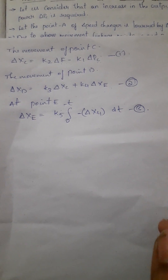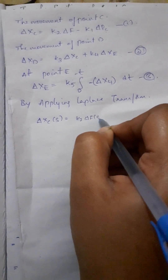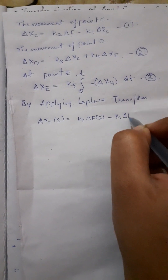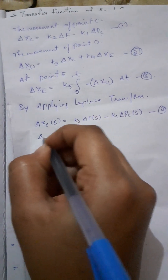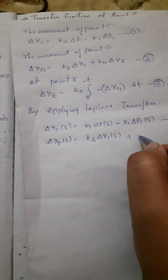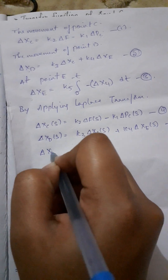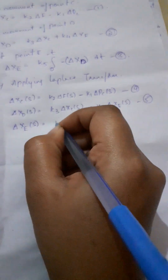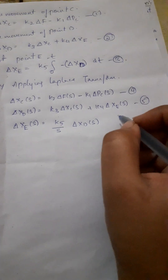We apply the Laplace transform to all three equations. Equation 1 after Laplace transform: δXc(s) = K2·δF(s) − K1·δPc(s) — this is equation 4. Next, equation 5: δXd(s) = K3·δXc(s) + K4·δXc(s). The last one, equation 6: δXe(s) = K5/s · δXd(s).